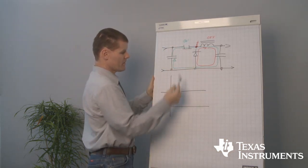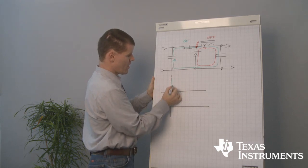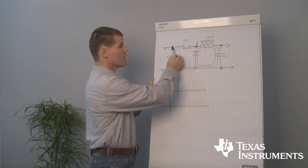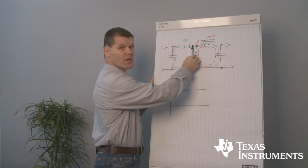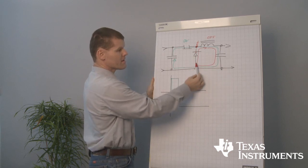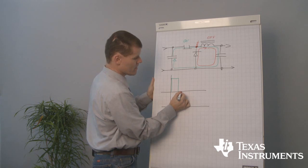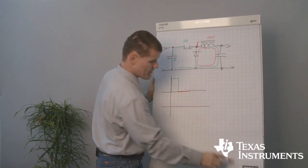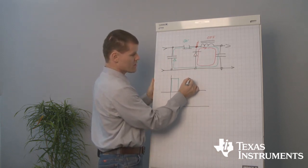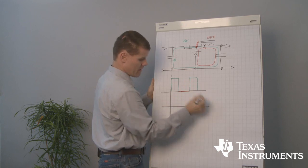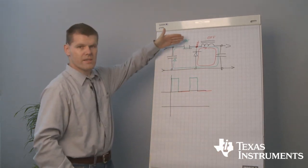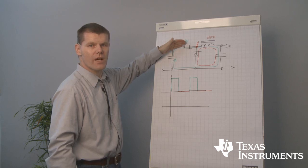During the on state of the converter, we will have the input voltage at the switch node because the switch, the MOSFET is closed. During the off state, the diode is conducting and minus forward voltage we will have here at the switch node. And again, switch is closed, on state again and again, off state. That's the voltage at our switch node inside the buck converter.